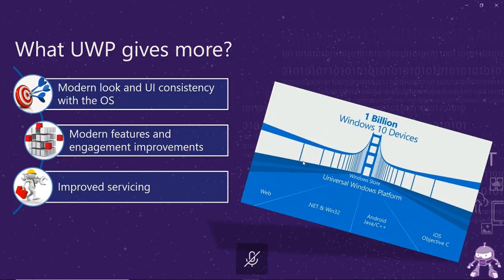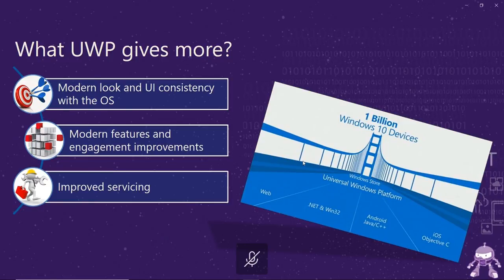UWP has some features that WPF or WinForms does not have. One of them is the modern look and feel. At Build 2017, the current design was introduced — it was actually built using some of the UWP APIs, and more specifically the Composition API. Another feature that UWP provides compared to WPF is the engagement experience, for example push notifications, live tiles, and toast notifications.